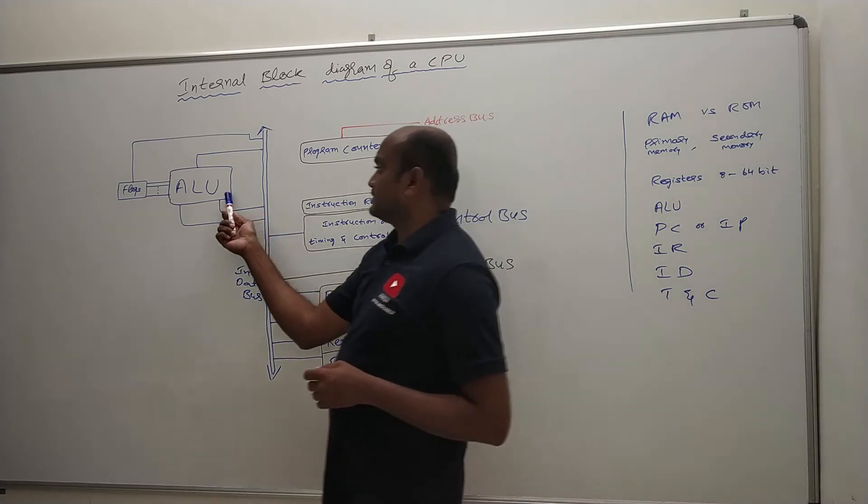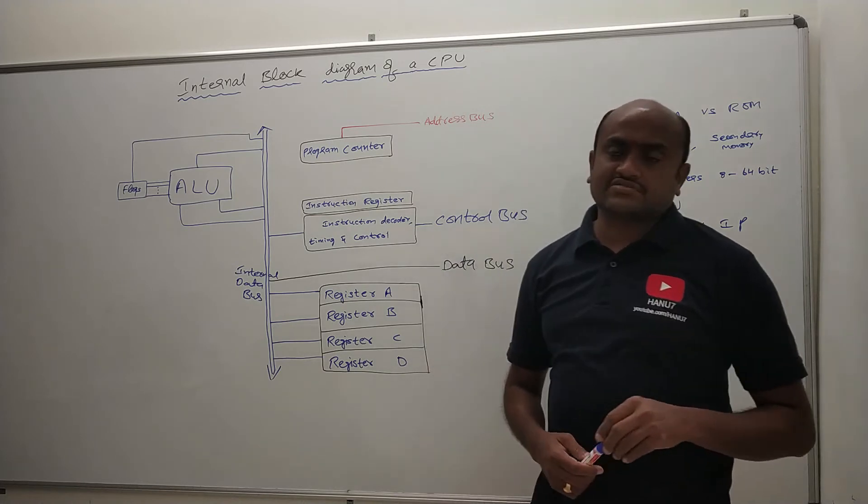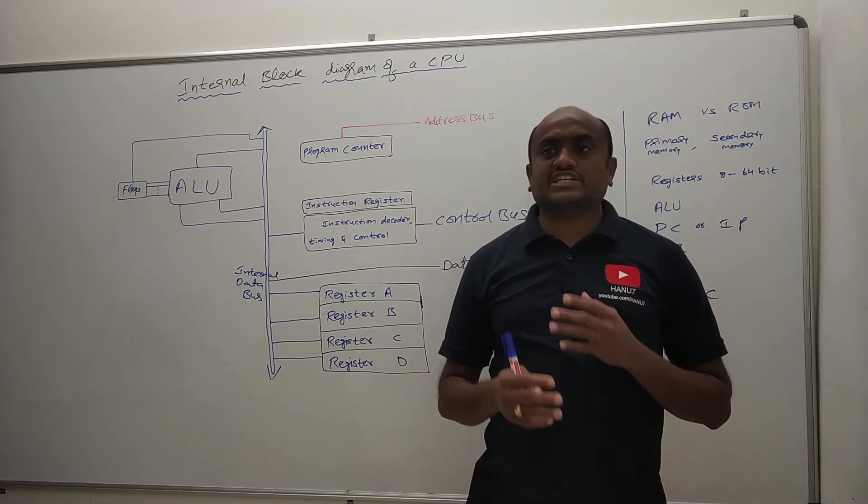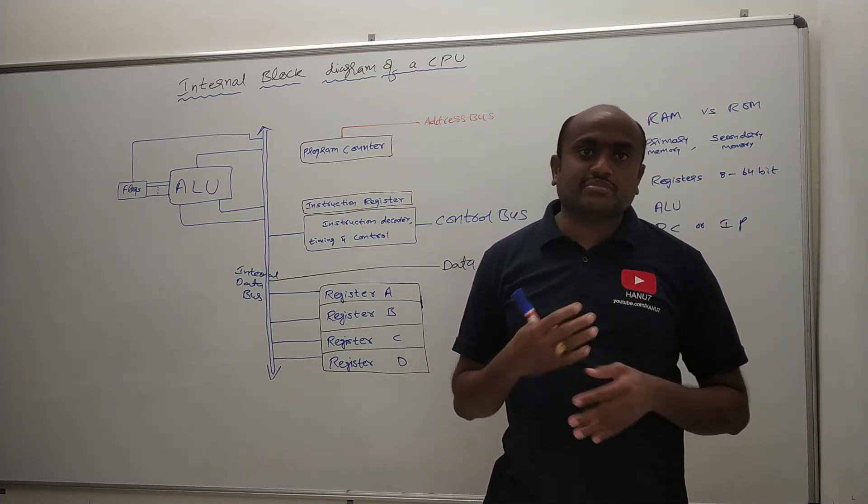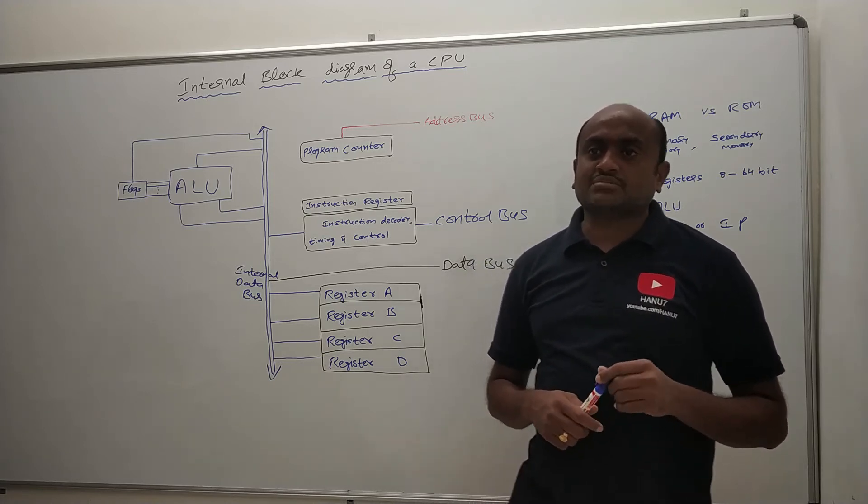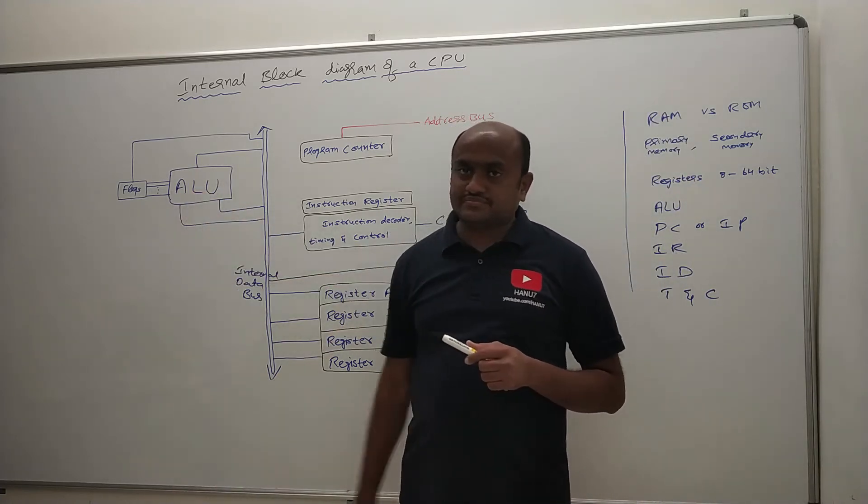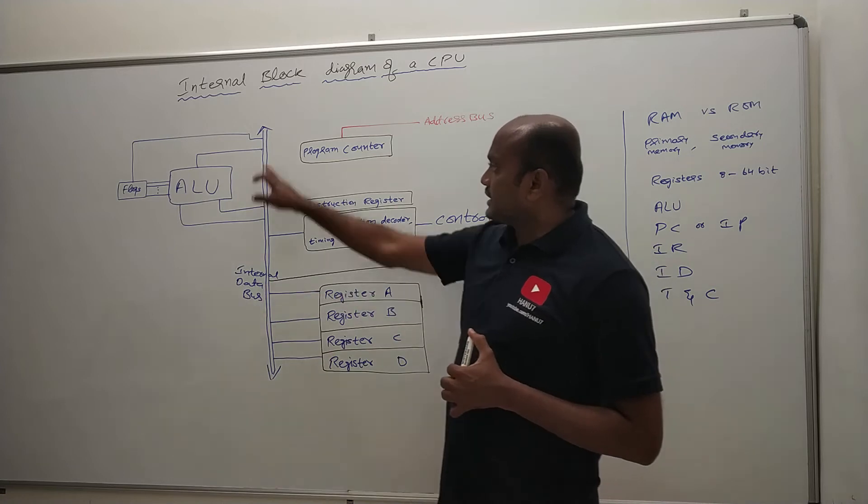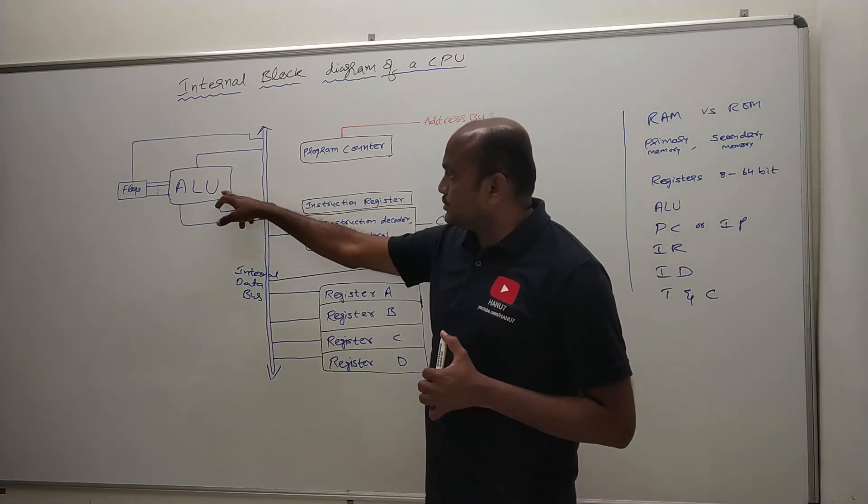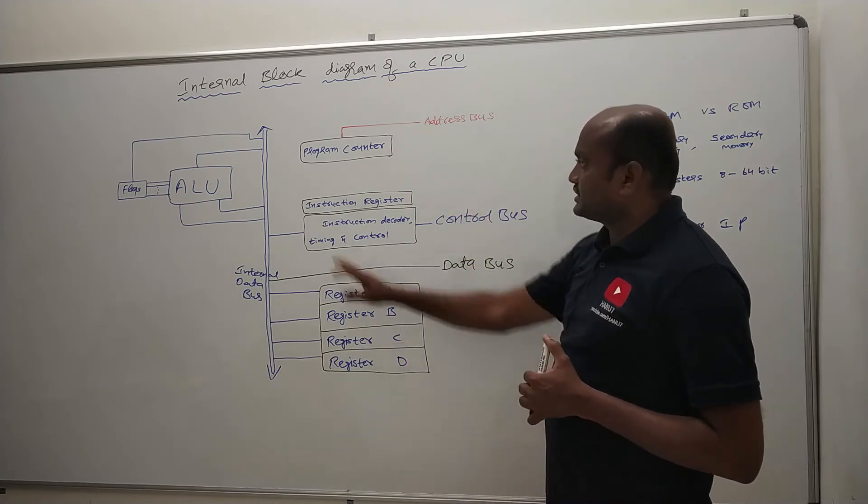And you can see here there is one block connected to the ALU which is called flags. This flags will maintain the status of ALU operation. What is happening during ALU operation, such status can be captured in this flag register. And how this ALU is going to get the information I will tell you after explaining this side also.